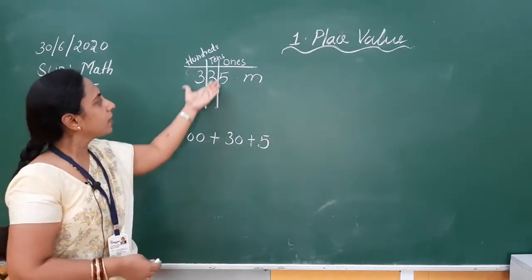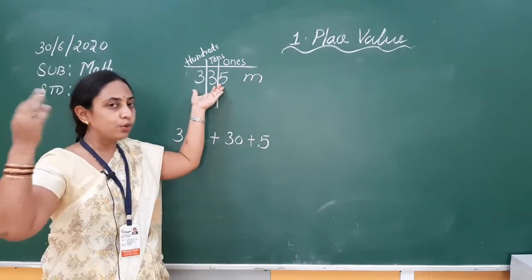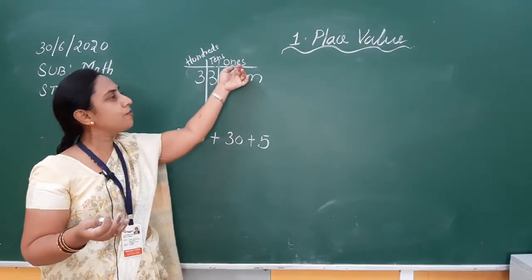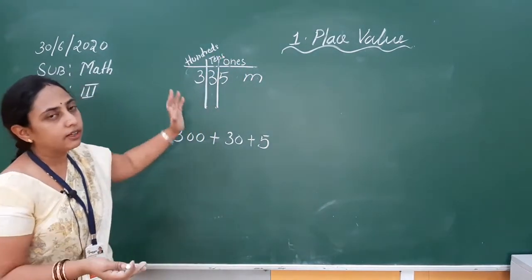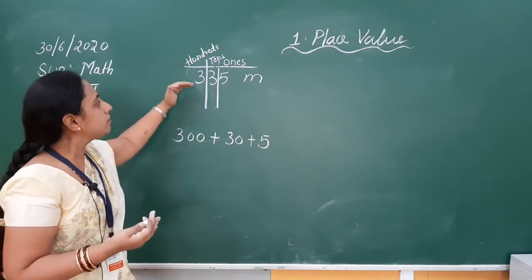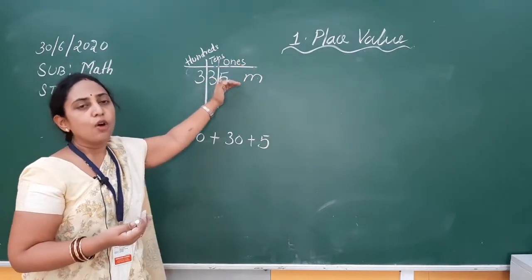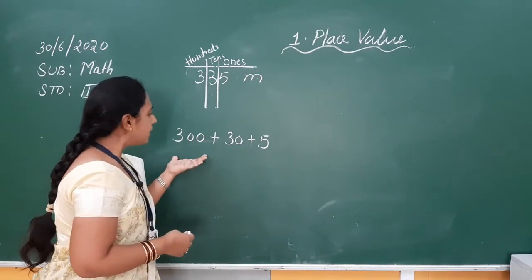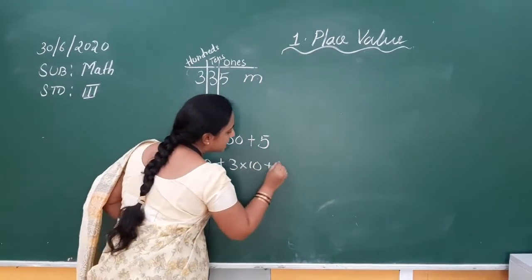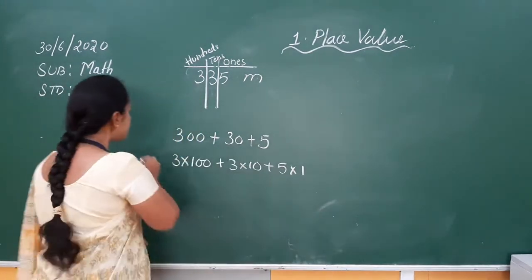Now let us see the expanded form of 335. The first 3 is in the 100s place, so we write 300. The next 3 is in the 10s place — just like 3 tens equals 3 into 10 — so that is 30. And 5 is in the 1s place, so 5 into 1. Whenever we calculate the place value, we simply multiply the digit by the value of the place where it is. So 3 into 100, plus 3 into 10, plus 5 into 1.